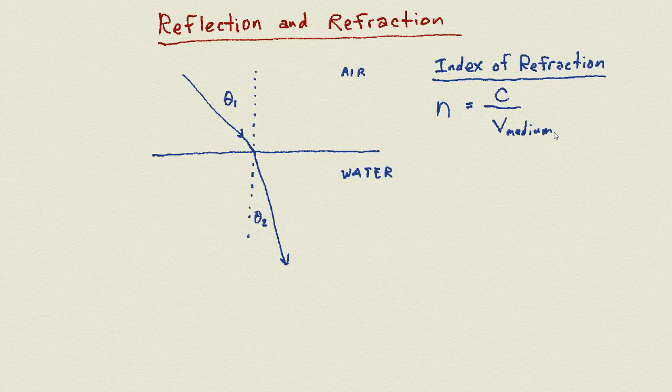For instance, the index of refraction of air is about one, and the reason for that is that air barely slows it down. So if you were to take those values, the value of the speed of light in air is pretty close to the speed of light in a vacuum. So we get the index of refraction of one.